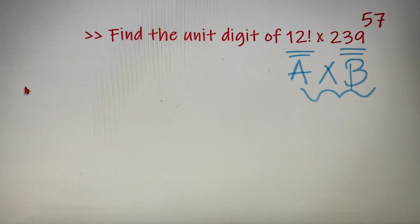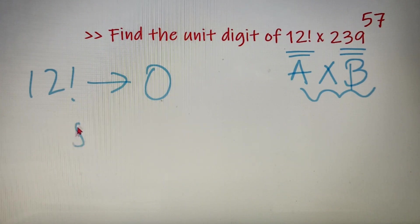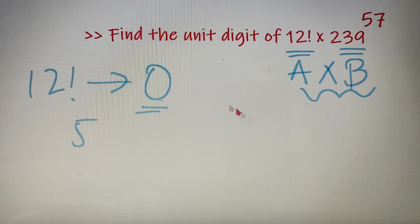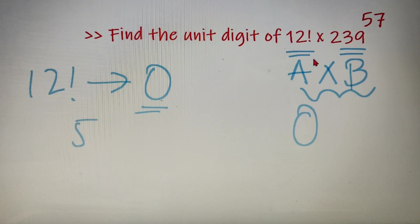Starting with our first number, 12 factorial: the unit digit of 12 factorial is 0, because the unit digit of all factorials from 5 onwards is 0. Now since the unit digit of our first number is 0, we don't have to calculate the unit digit of the second number, because 0 multiplied by anything will always give 0. So the unit digit of 12 factorial into 239 raised to the power 57 is 0.